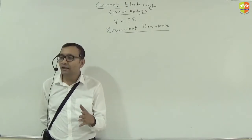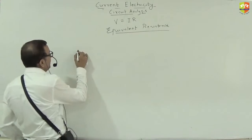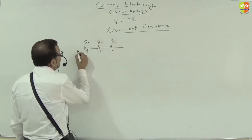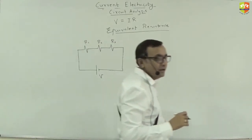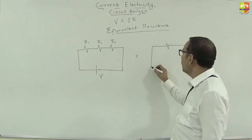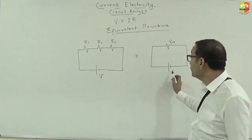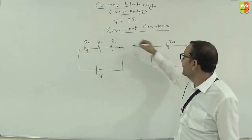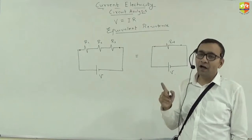Let us first analyze how to find equivalent resistance when resistances are connected in series. Suppose three resistances R1, R2, and R3 are connected across a battery of voltage V. The question is: can I replace all three resistances with a single resistance of value R_equivalent, without the battery knowing about it — so nothing changes across those two points? What is the value of R_equivalent in terms of R1, R2, and R3?